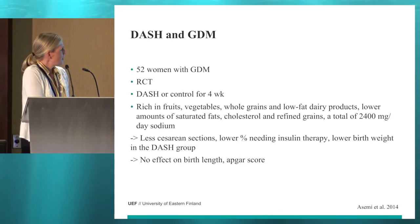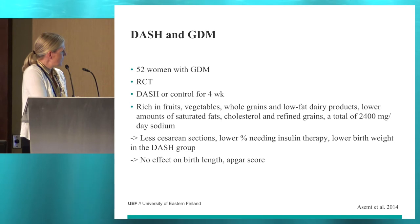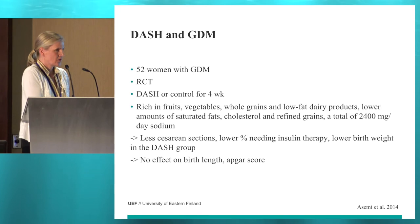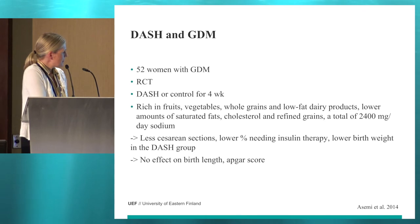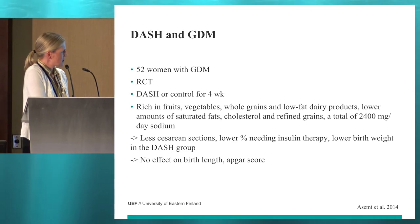There are three studies regarding DASH and gestational diabetes. In one study with 52 women, a randomized controlled trial, subjects were randomly assigned either to a DASH diet or a control diet for 40 weeks during gestational weeks 24 to 28. The diet prescribed for the intervention group strictly followed the principles of the DASH diet — rich in fruits, vegetables, whole grains, and low-fat dairy products, with low amounts of saturated fat, cholesterol, and refined grains.